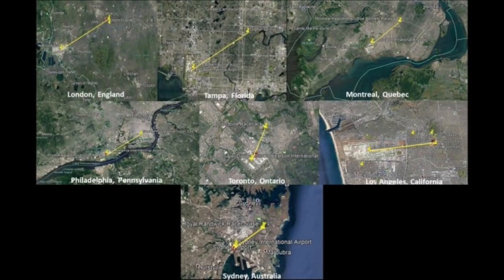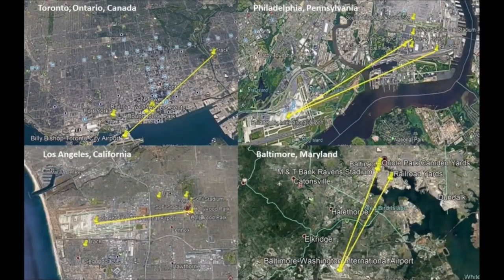Commenters left other examples of the same relationship between airports and racing tracks, past and present, including but not limited to places like Montreal, Quebec, Canada; Philadelphia, Pennsylvania; Toronto, Ontario, Canada; Los Angeles, California; and Sydney, Australia. In addition to airports and racetracks, I am also finding things like railroad yards, professional sports complexes, star forts, and even amusement parks with similar characteristics and relationships to each other in different cities around the world.